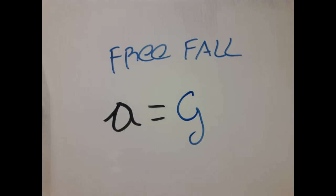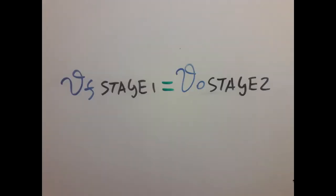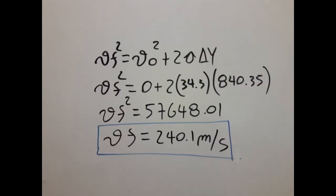That's the acceleration we're going to use for the second stage. And as you can see, we have to calculate the final velocity for stage 1, which is going to be the initial velocity for stage 2. To get the final velocity for stage 1, I am going to use this kinematic equation using the delta y we previously calculated.